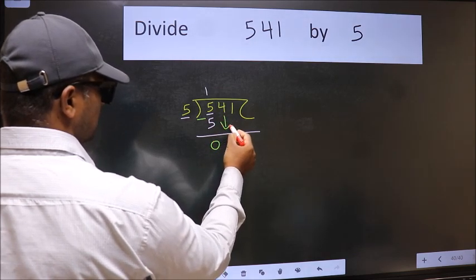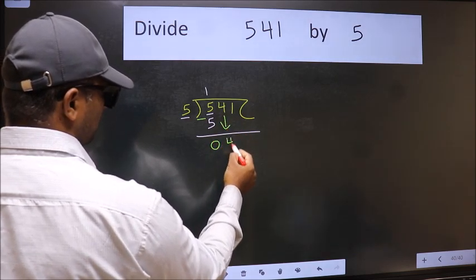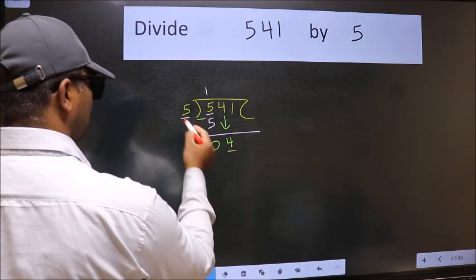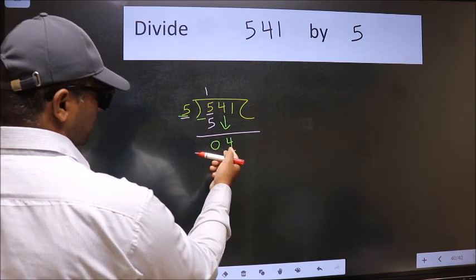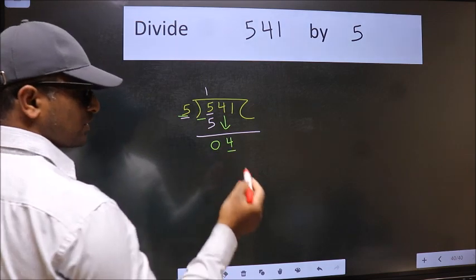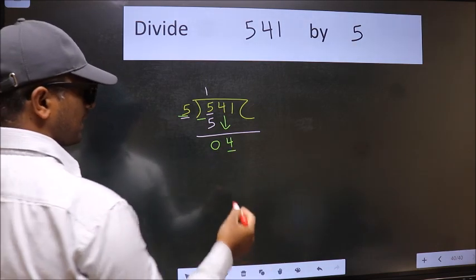After this, bring down the next number. So 4 comes down. Now here we have 4 and here 5. 4 is smaller than 5, so we should bring down the second number.